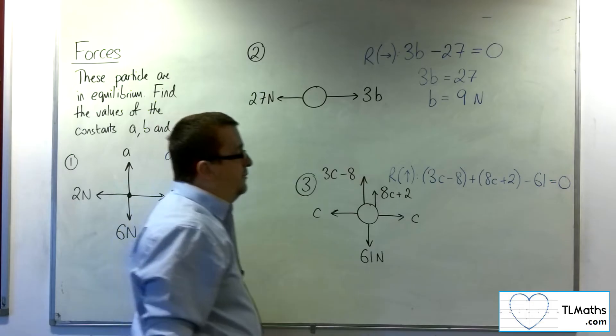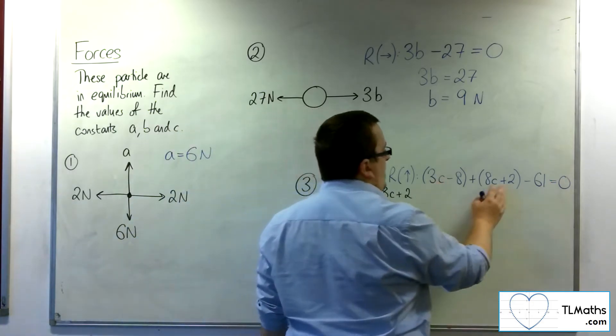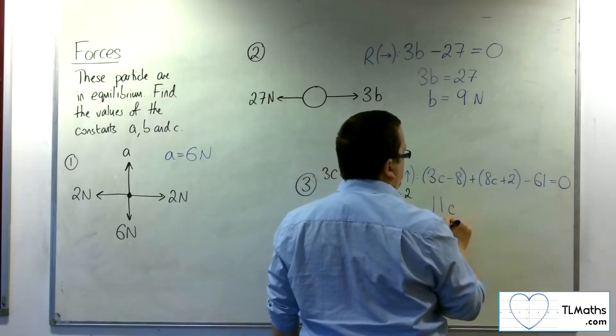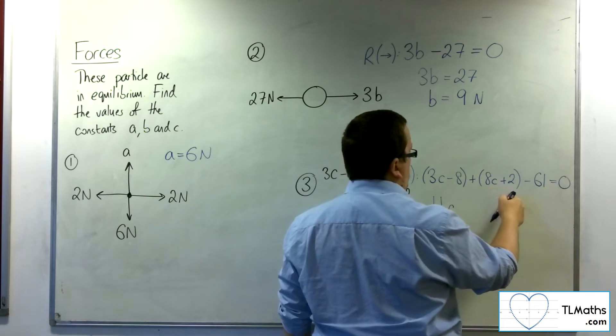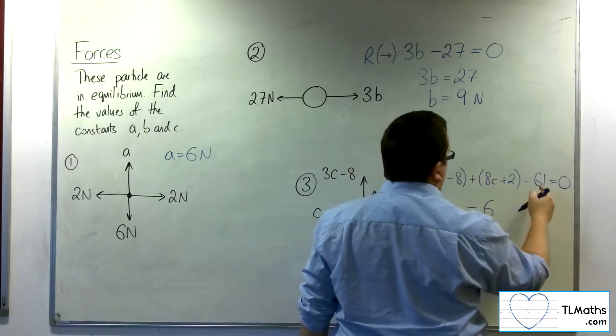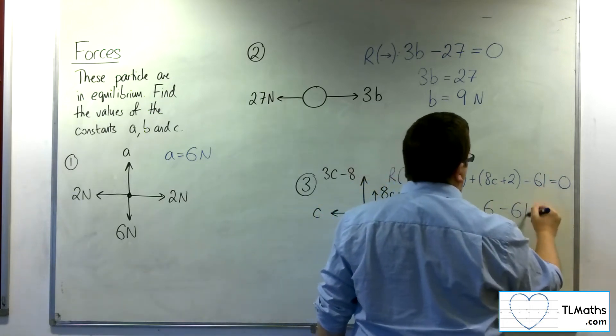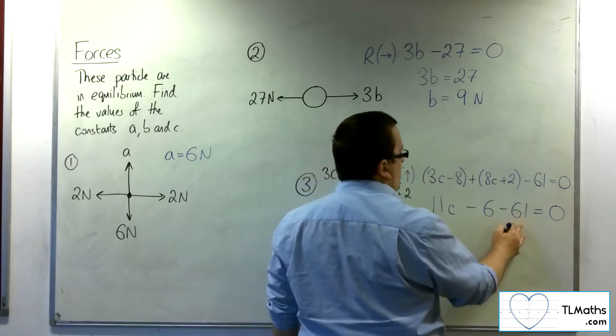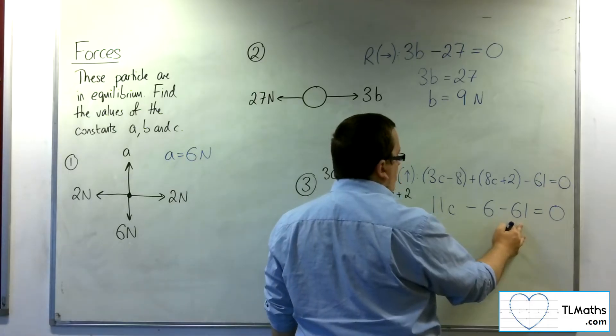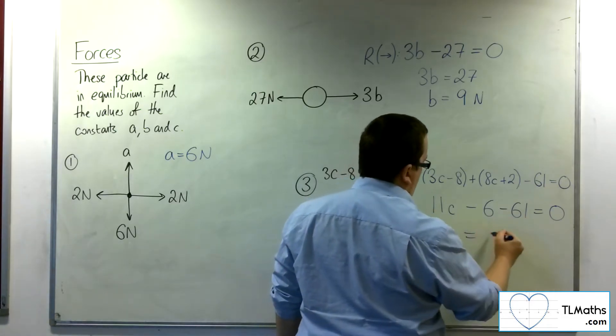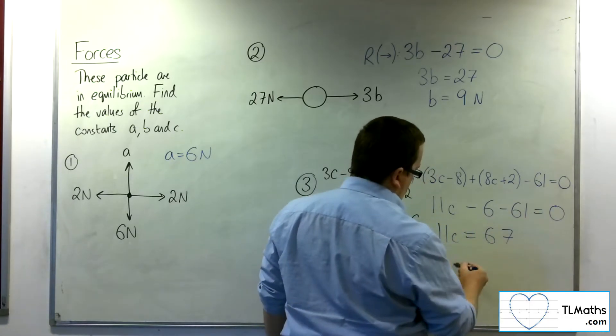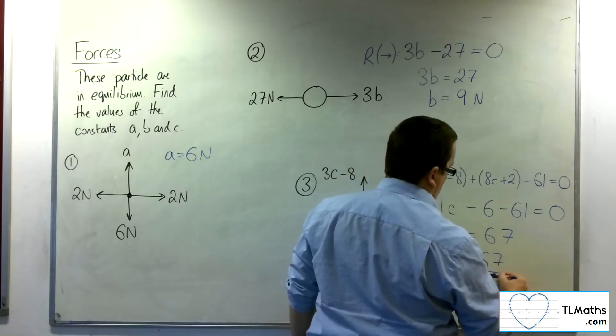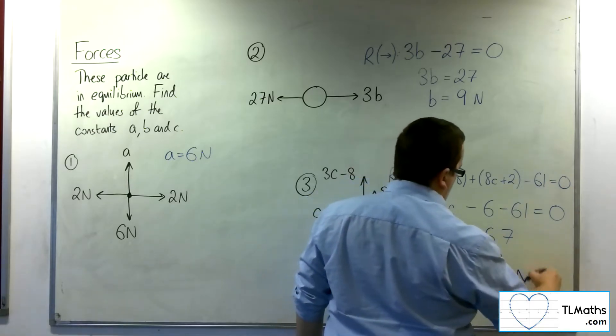This gives me an equation to solve. So I've got 3c plus 8c is 11c. I've got minus 8 plus 2 is minus 6. And then I've got this take away 61. So minus 6 take away 61 is minus 67. So 11c is 67. And so c is 67 elevenths newtons.